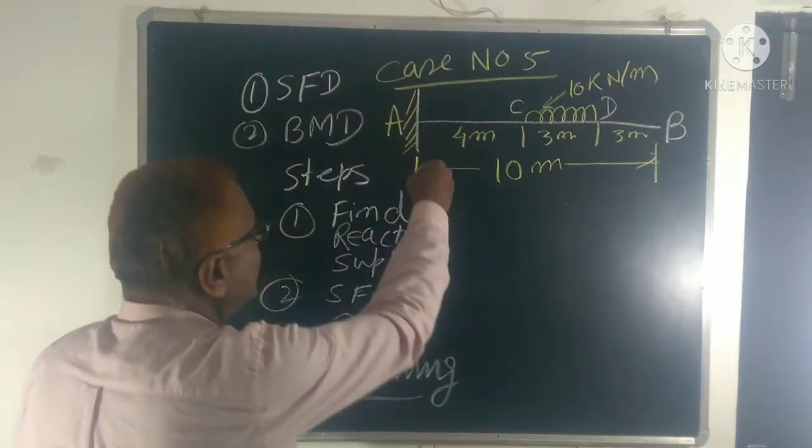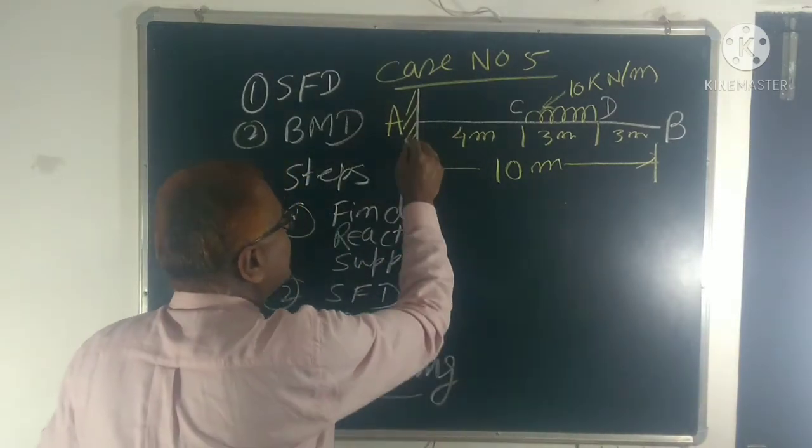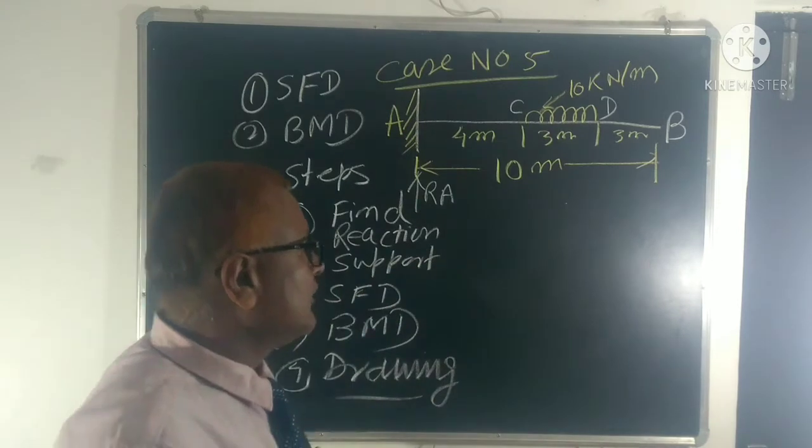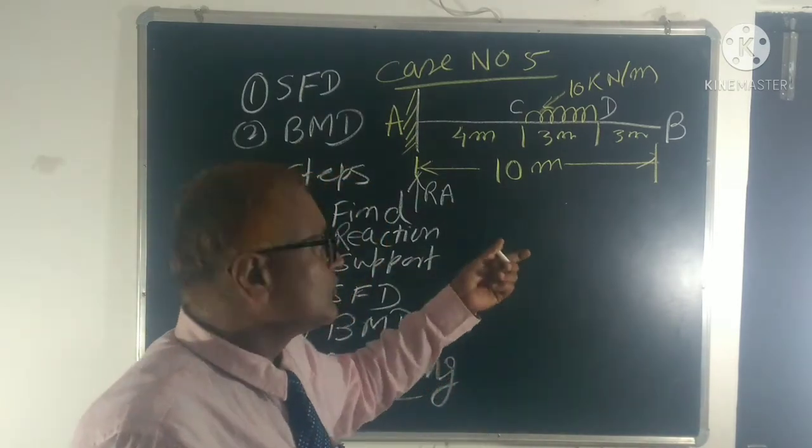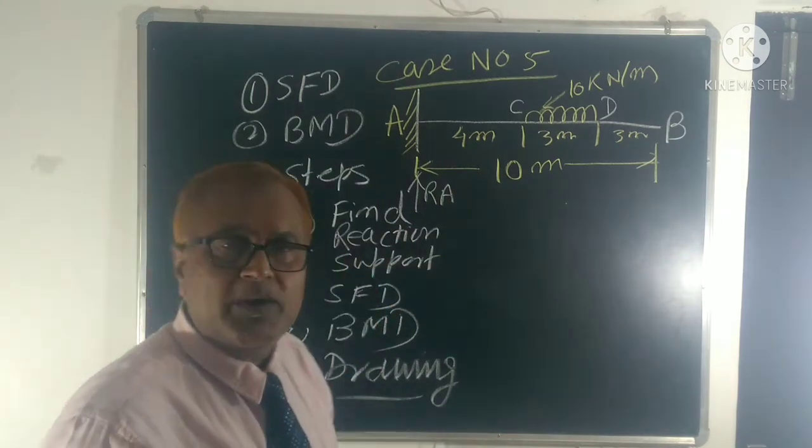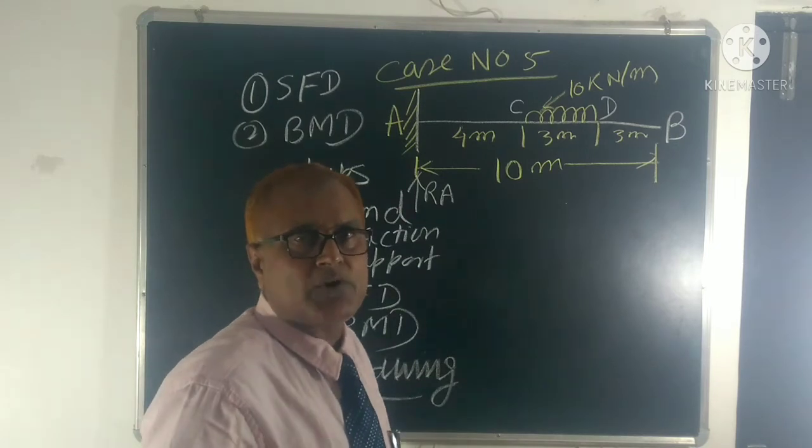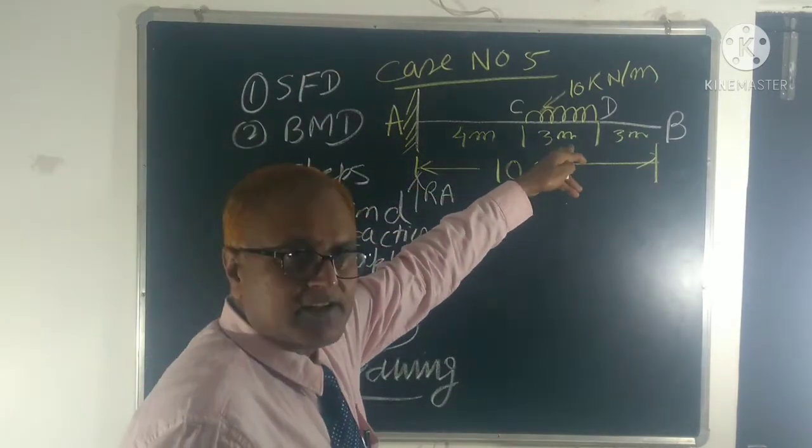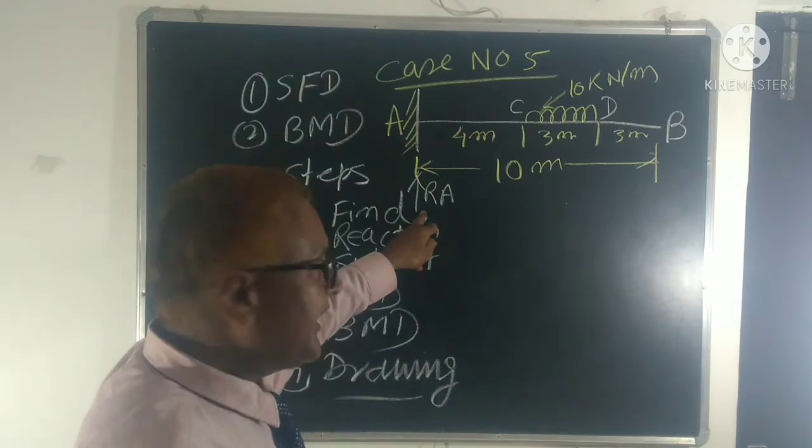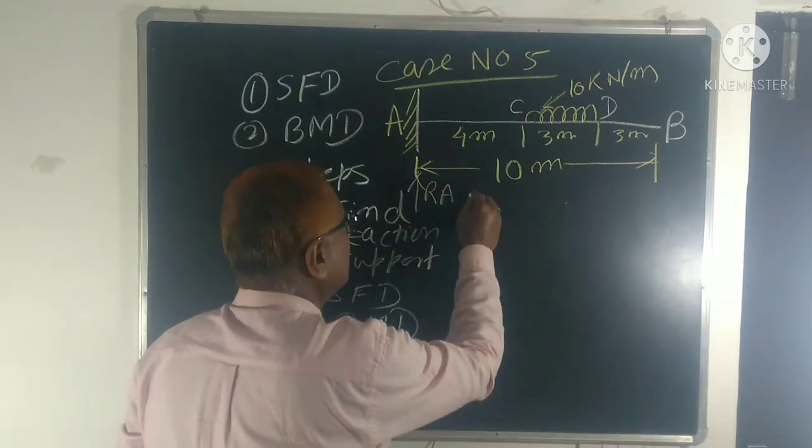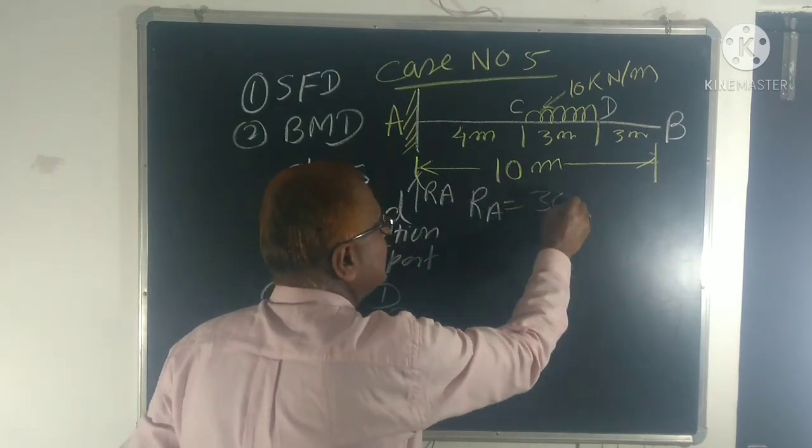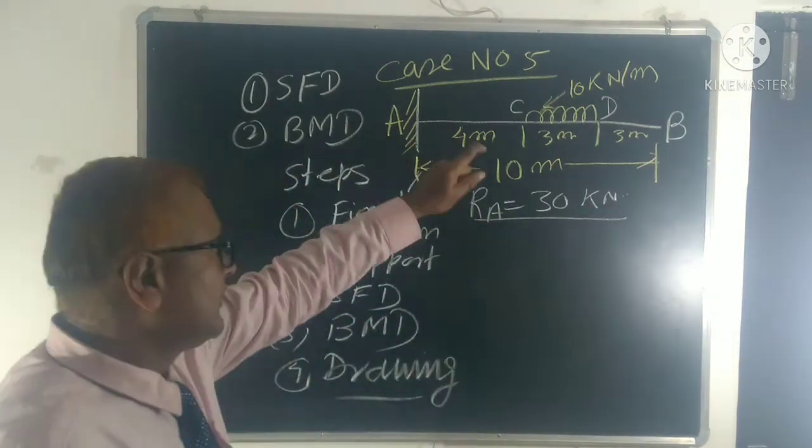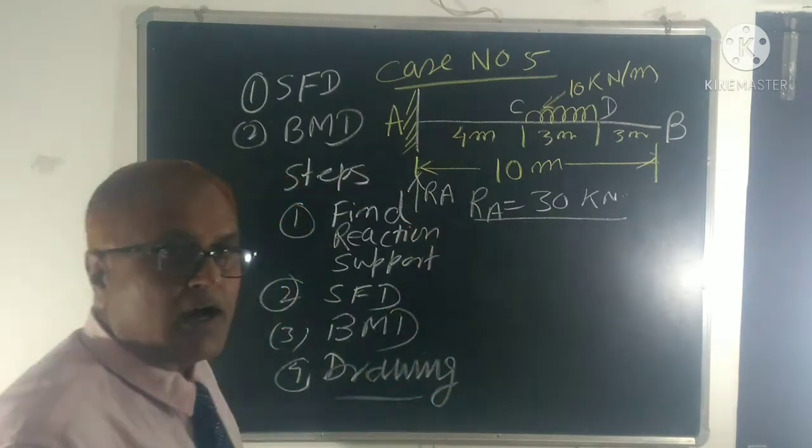So reaction, first reaction, what is this? Here is the Ra. This is Ra. Or you just say this is the statically determined structure so as per theory of equilibrium, upward force equal to downward force. So downward force is 10 into 3, 30 kilonewton. So Ra will balance. So Ra will be, Ra equal to 30 kilonewton. Okay, just very easy to solve this.